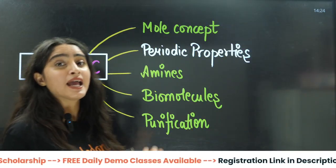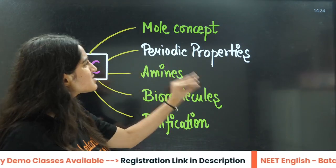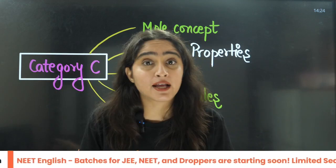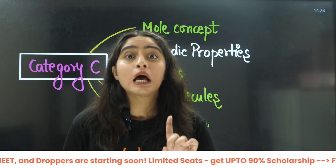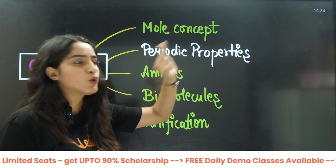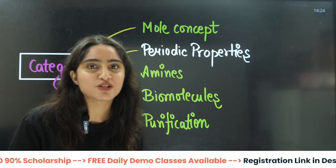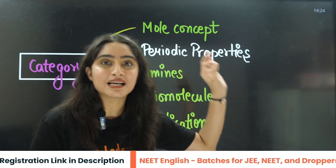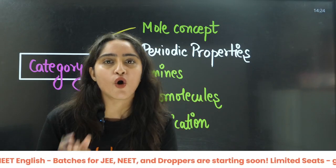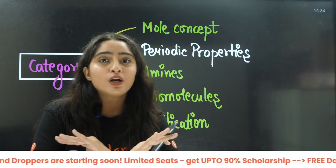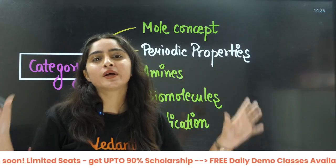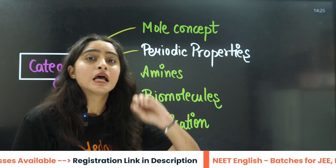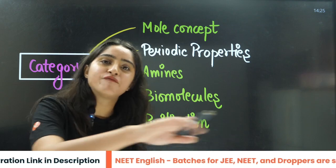In category C, you might think you can skip mole concept and periodic properties since they carry fewer direct questions. But you should not skip them. Without mole concept, you cannot do physical chemistry. And without periodic properties and periodic classification, you cannot understand inorganic chemistry or block chemistry. These chapters are applied everywhere in chemistry.